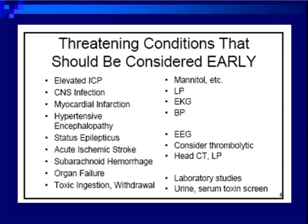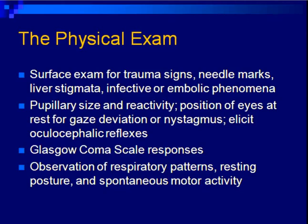When starting with a patient you think has acute altered mental status, do a focused examination looking for signs of trauma and needle marks — that gives a hint for heroin overdose. Look for stigmata of liver disease or signs of infective or embolic phenomena. Assess pupillary size and reactivity, check baseline eye position for deviation or nystagmus, and when appropriate test the oculocephalic reflex after confirming the neck is stable. Perform a Glasgow Coma Scale to establish a baseline and monitor improvement or deterioration. Also look at respiratory pattern — apnea, Cheyne-Stokes — and resting posture or spontaneous motor activity.